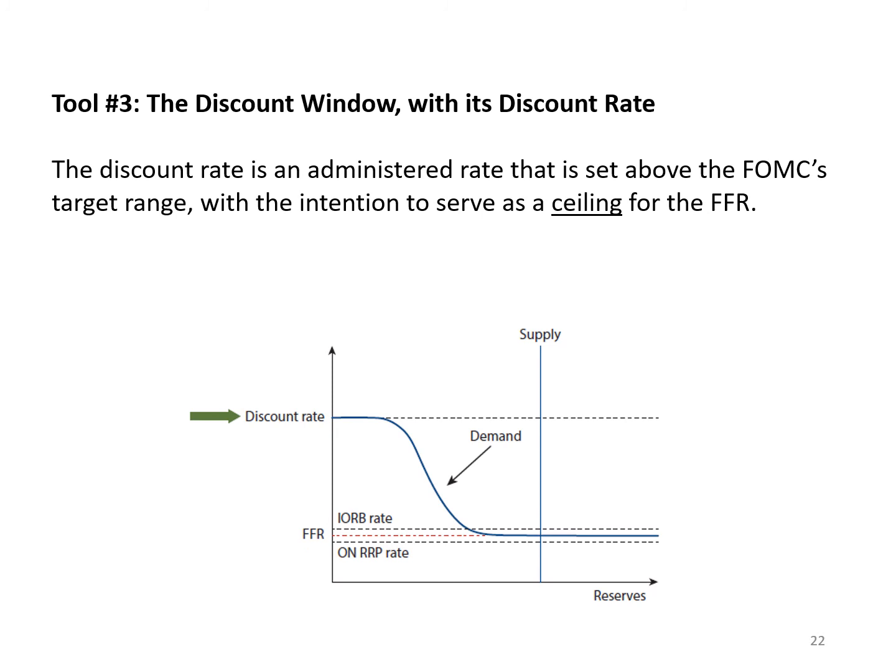Higher up on the figure is the discount rate. The Federal Reserve lends to depository institutions through the discount window to support liquidity and stability in the banking system and support effective implementation of monetary policy. The discount rate tends to be set 50 basis points — half a percentage point — above the interest on reserve balances rate. Banks should not be willing to pay more for reserves in the market than the discount rate. As such, the discount rate acts as a ceiling for the federal funds rate.